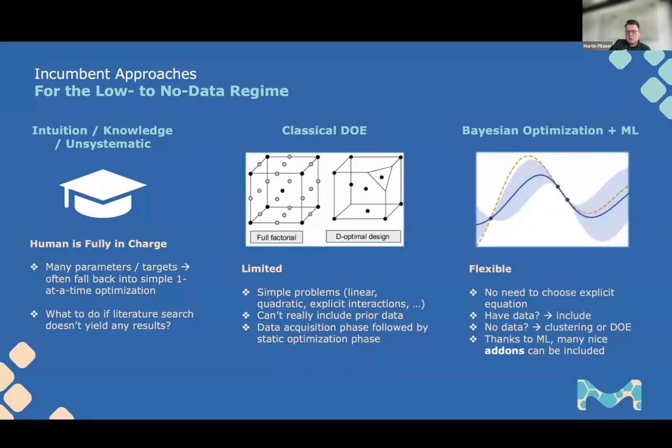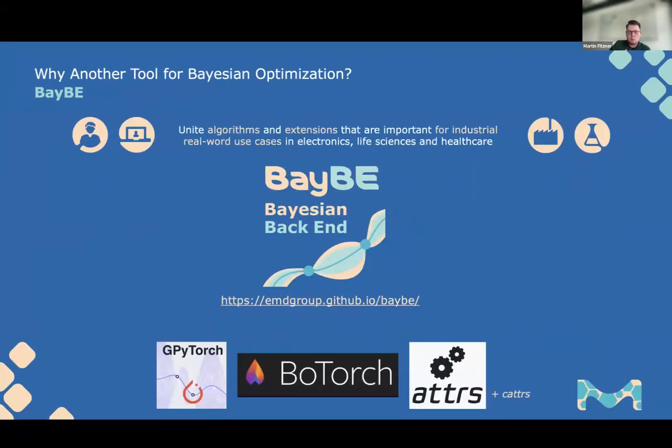It's not so easy to include prior data. Also, the fact that you can actually update your surrogate model is a super nice thing. It is typically not done in classical DOE. So there's a lot of downsides or limitations if you come to complex problems. That's why everyone now likes to use Bayesian optimization plus machine learning. That is also another important component because you don't need to choose your surrogate model. You don't need to write it down. You don't need to know the interactions in advance. If you have data, you can include it in the model and you update it sequentially.